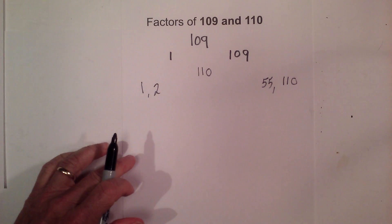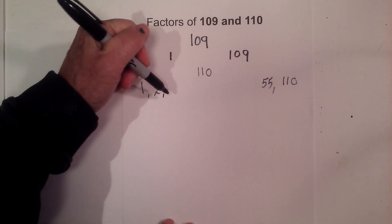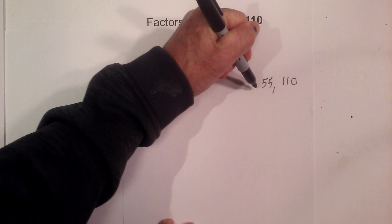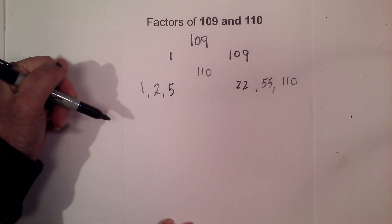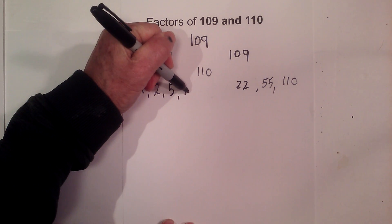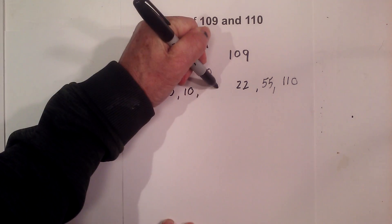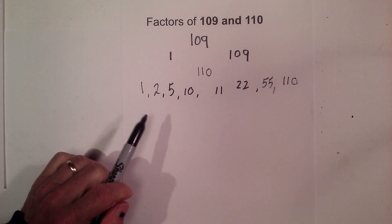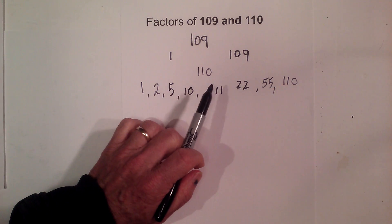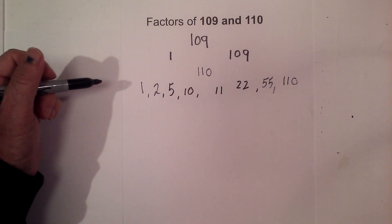Now 3 will not go into it, nor will 4, but 5 goes into 110 22 times. And then let's try 10 times 11. So the factors of 110 are 1, 2, 5, 10, 11, 22, 55, and 110.